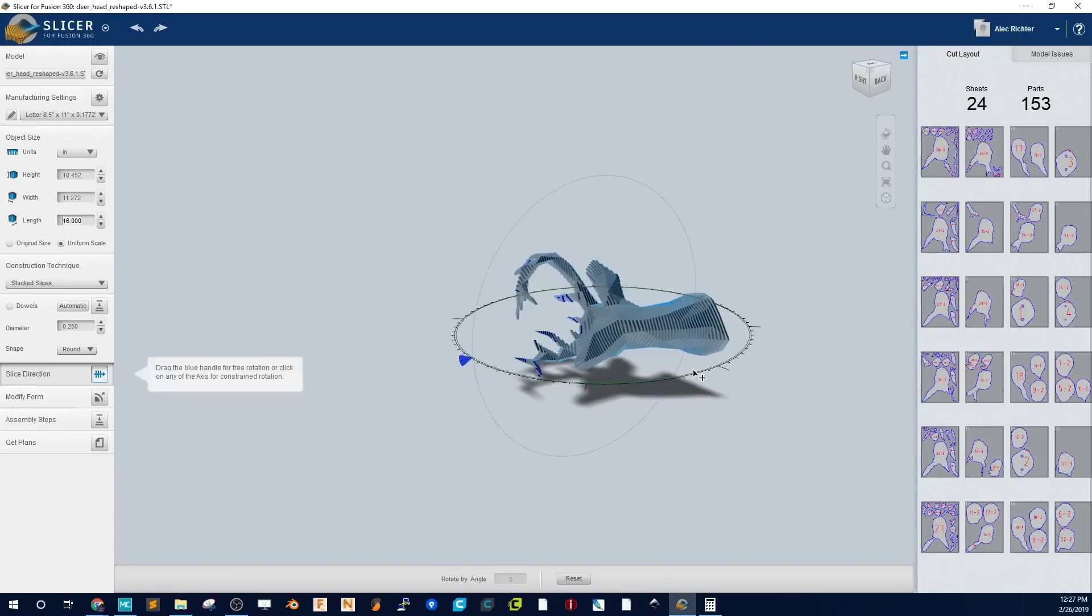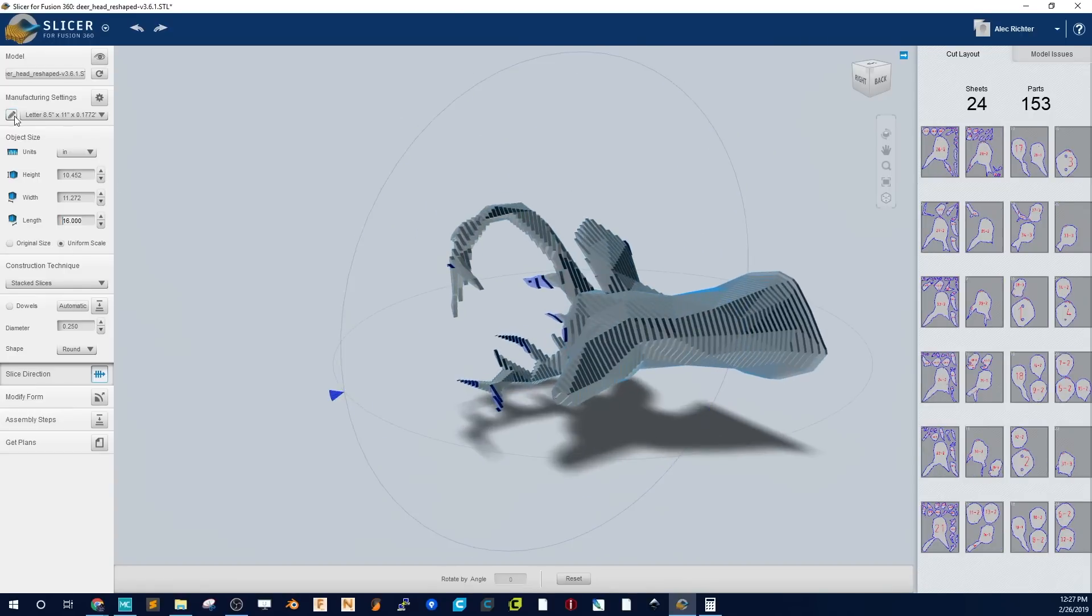For our first project, we'll be converting a 3D model of a deer head into something that we can laser cut. We're going to use a program called Autodesk Slicer. Now that program's not designed for 3D printing, it was actually built for laser cutting because what you can do is take your model, convert it into a bunch of flat images and create something like this,